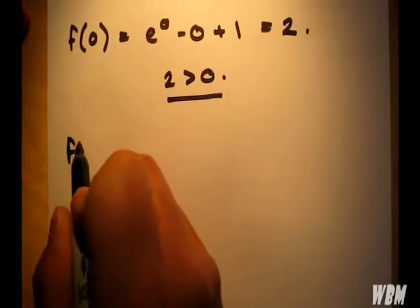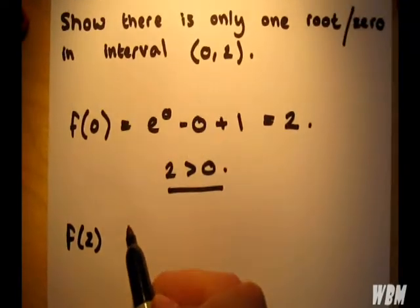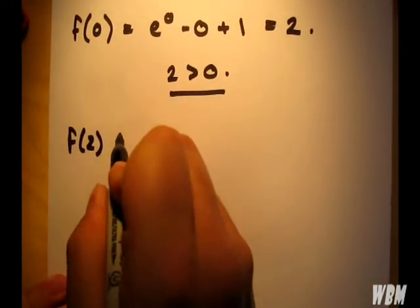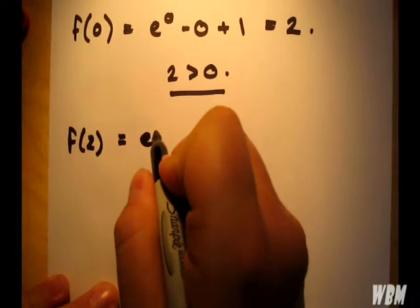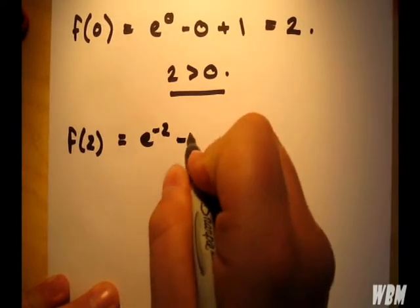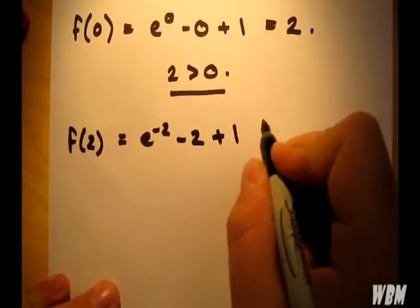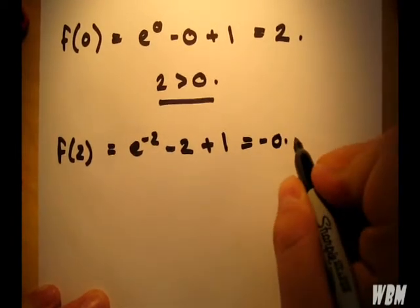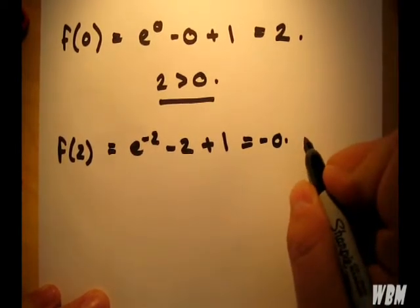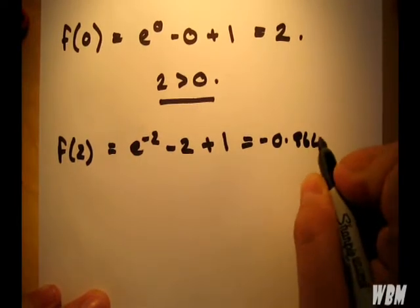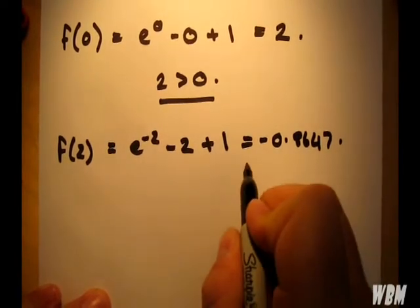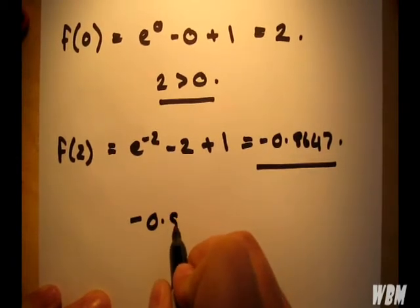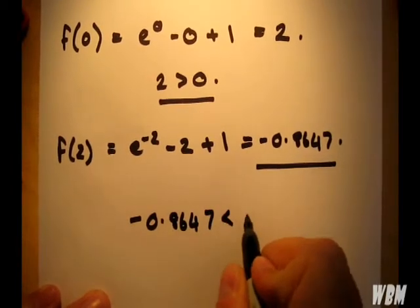Now, we put in 2. So we have f of 2 equals e to the minus 2, minus 2 plus 1. If you use your calculator, that will give you minus 0.8647 to 4 decimal places. Now, of course, we have minus 0.8647 to be less than 0.